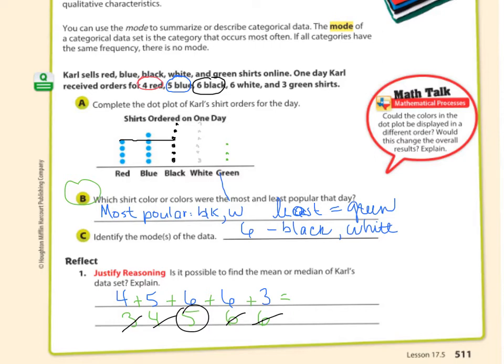To find the mean, we would add them all together, which is 9, 15, 21, 24, divided by 5. That's 24 divided by 5, which is four and eight tenths. Part of a shirt, that doesn't make sense. So the median would be the best one to go with here.